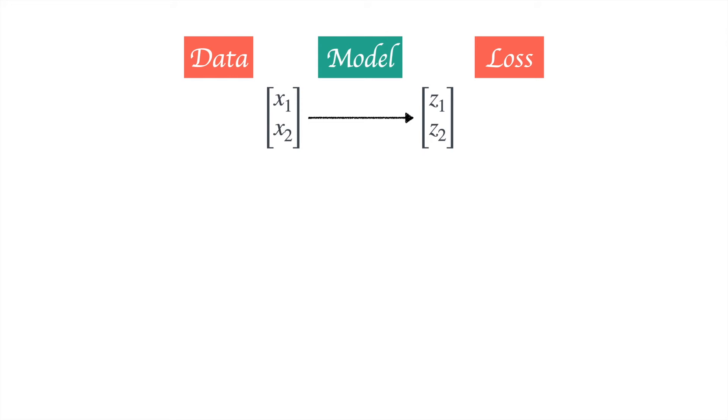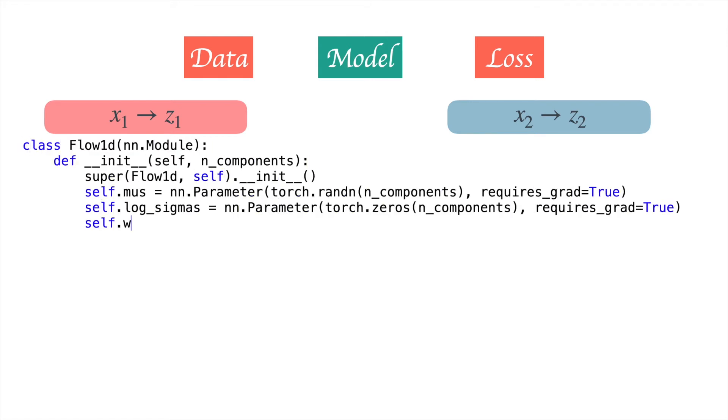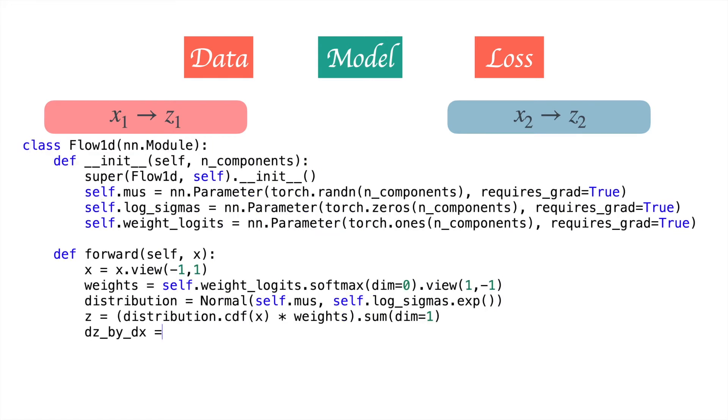Now let's look at the model. We want to define a model which maps x1, x2 to z1, z2. What we can do is write one function which maps x1 to z1 and another function which maps x2 to z2. Let's look at the function which maps x1 to z1. It is simply going to be a CDF whose parameters are sigmas and mus, and it maps x1 to z1 just the way we have seen for 1D data.